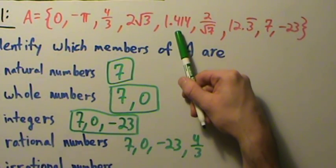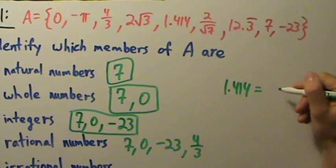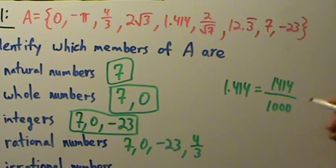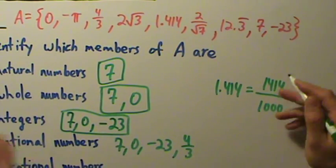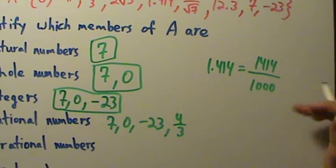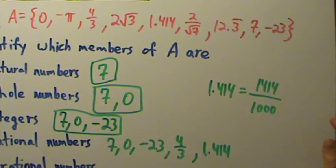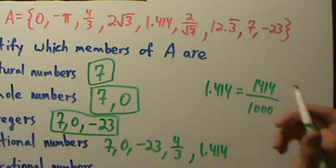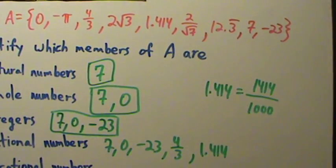How about 1.414? Yeah, it's a decimal and it terminates. Another way of thinking about that is we can say it's 1414 over 1000. We can express this as a ratio of two integers, so 1.414 is rational. How about two divided by root seven? No, because the square root of seven is irrational, so two divided by root seven is still going to be irrational.